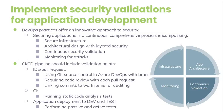DevOps practices are enabling businesses to stay ahead of the competition by developing new features at a faster pace. Even though you might have an increase in production development, you must ensure that business agility does not come at the expense of security. Security needs to shift from an afterthought to being evaluated at every step of the process. Securing the application is a continuous process that encompasses secure infrastructure design and architecture with layered security, continuous security validation, and monitoring of attacks.